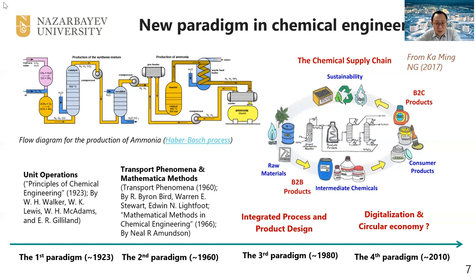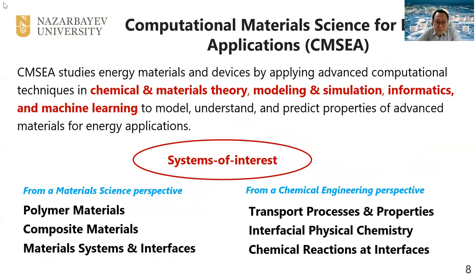If we want to find renewable energy solutions, we need certain types of products, and we can use this chemical engineering product design idea to find the optimal process. For instance, we can take a chemical engineering design approach to optimize lithium-ion batteries. In my lab, we study different types of energy materials and devices using advanced computational techniques, not limiting ourselves to a particular type of computational method.